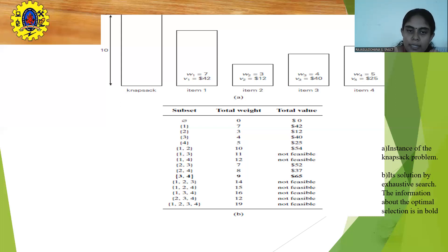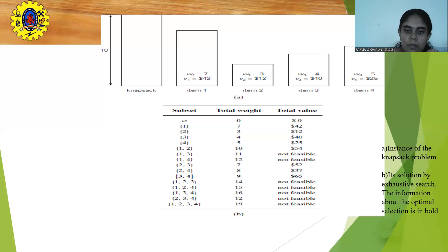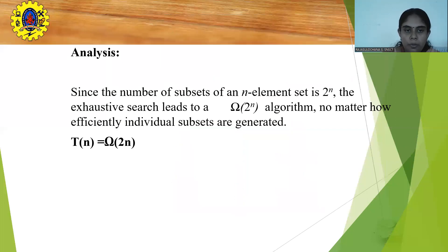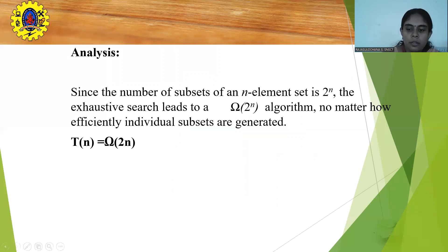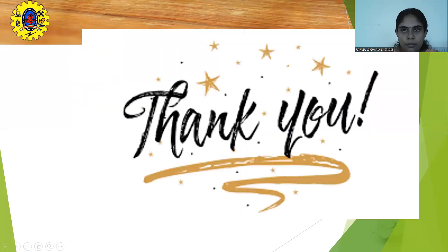Totally 16 subsets were listed for 4 items, so the number of possibilities is 2 power n. When n equals 4, we have to check 2 power n combinations before finding the optimal solution. Therefore the time complexity of the knapsack problem using brute force is O(2^n). Thank you. We will see another interesting topic in the next lecture series.